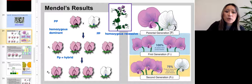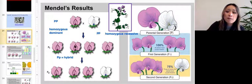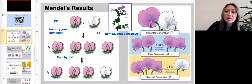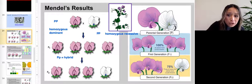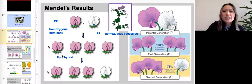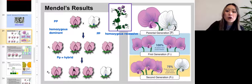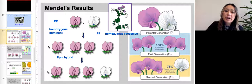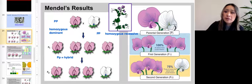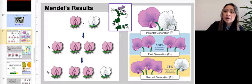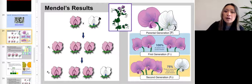And then what they produce, this is called the first generation or F1. And when you cross that first generation, what their offspring are called are the second generation or F2.